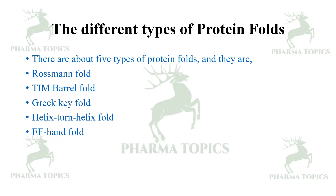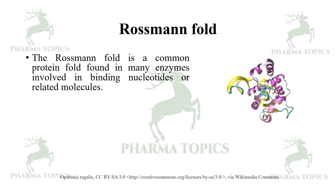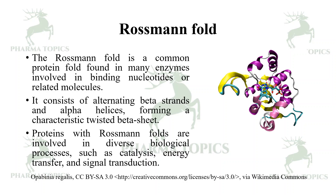The Rossmann fold is a common protein fold found in many enzymes involved in binding nucleotides or related molecules. It consists of alternating beta strands and alpha helices forming a characteristic twisted beta sheet. Proteins with Rossmann folds are involved in diverse biological processes such as catalysis of different reactions, energy transfer, and signal transduction.